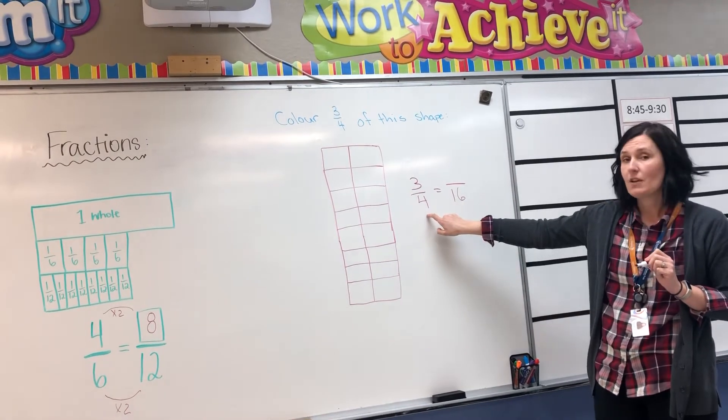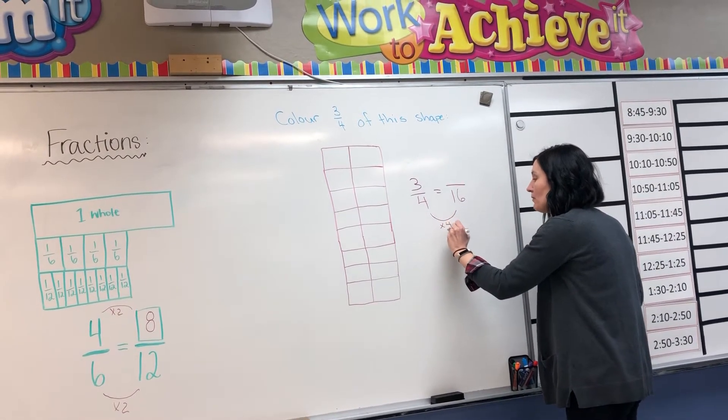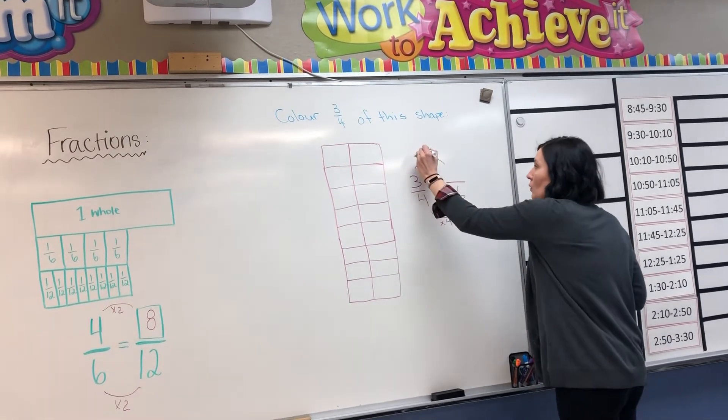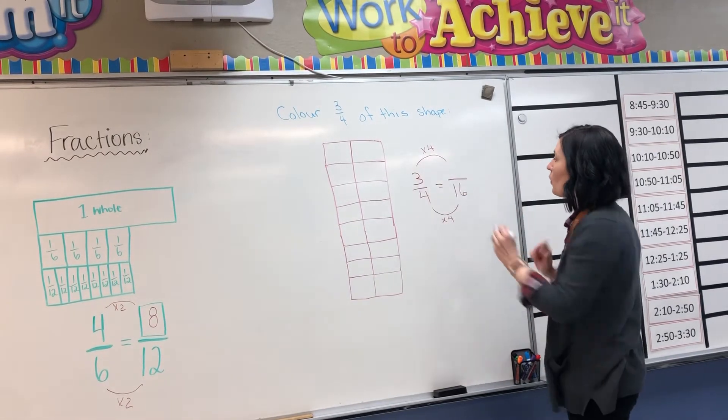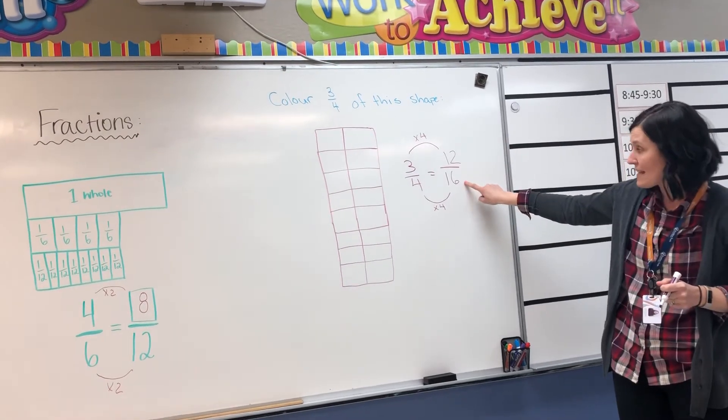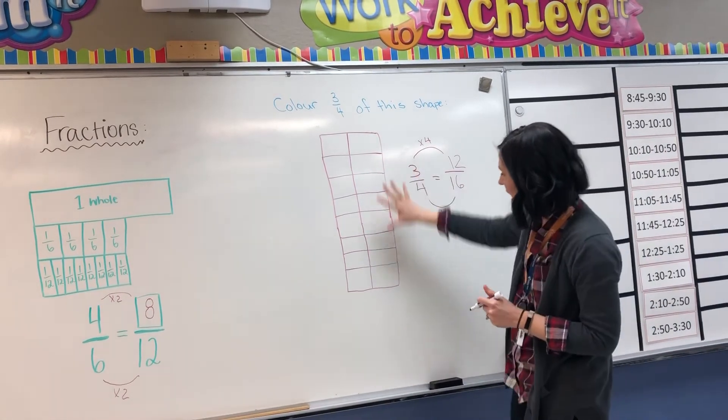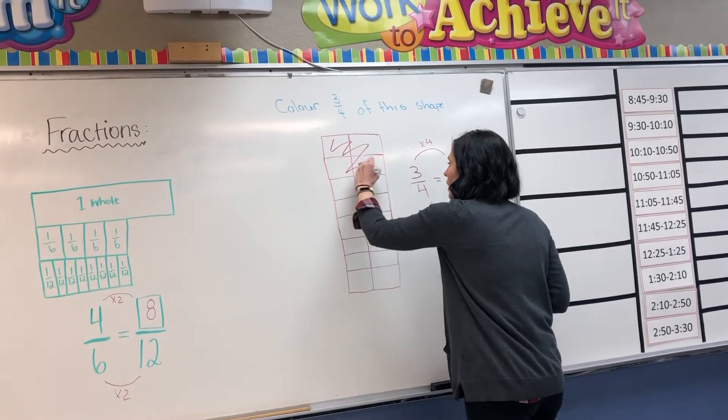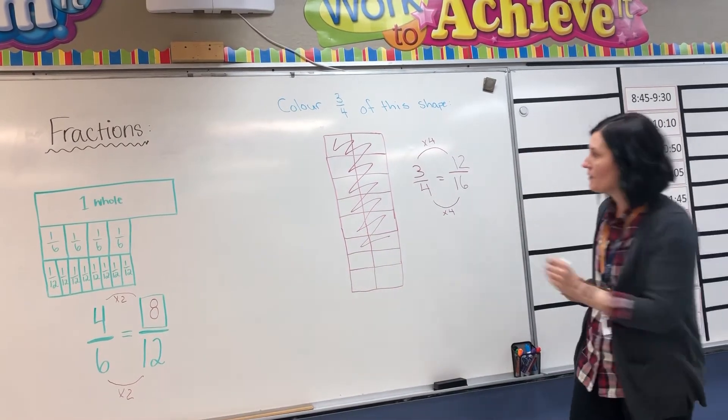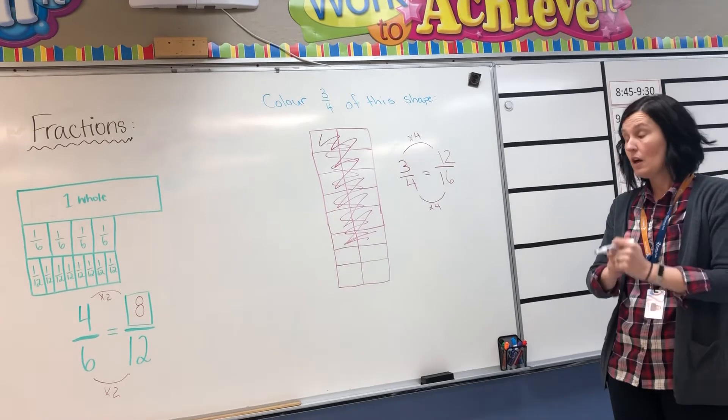How do I get from four to 16? I multiply by four, right? Four times four is 16. So now we want to do the same thing to the numerator. We're going to go times four. Three times four is 12. So 12 sixteenths is equivalent to three quarters or three fourths of this shape. So let's color in 12 sixteenths of this shape or three quarters of our shape.